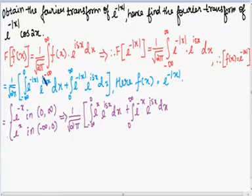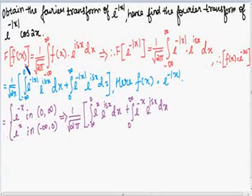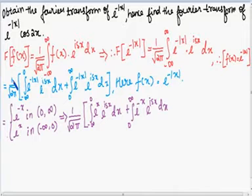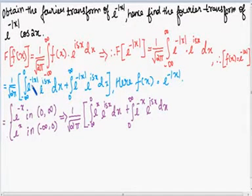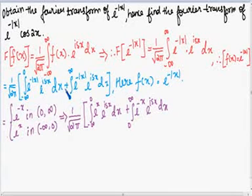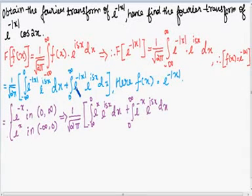Now, let us split the integral from minus infinity to plus infinity into two integrals: one from minus infinity to 0, and another from 0 to infinity. The Fourier transform of f(x) is written as 1 divided by square root of 2π, integration from minus infinity to 0 of e^(-|x|)·e^(isx) dx, plus integration from 0 to infinity of e^(-|x|)·e^(isx) dx.